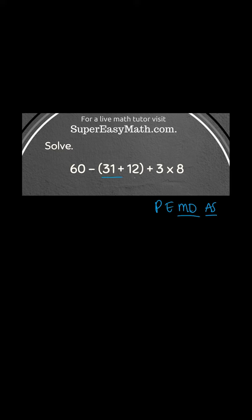I can see that I have parentheses right here, so I'm going to solve that. I'm going to rewrite this whole problem. So it's 60 minus, instead of 31 plus 12, I'm going to write 43, and then plus 3 times 8.